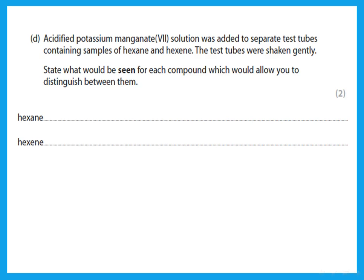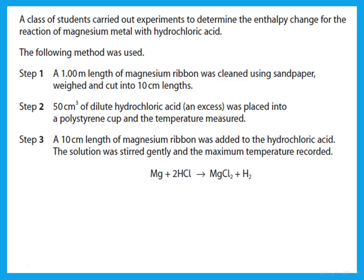Acidified potassium manganate was added to separate test tubes containing samples of hexane and hexene. Potassium manganate is also an oxidizing agent — it oxidizes alcohols similarly to dichromate. Here we are reacting it with an alkane and an alkene. Potassium manganate can react with an alkene: with the alkane there is no reaction, but with the alkene, potassium manganate will form a diol, and the potassium manganate itself turns from purple to colorless.